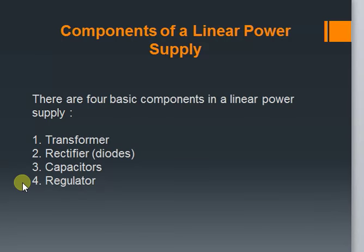The last component of the linear power supply is the regulator IC, which is used to maintain a constant voltage at the output. This device handles the varying voltage at its input side and dissipates the extra voltage to give a constant voltage.